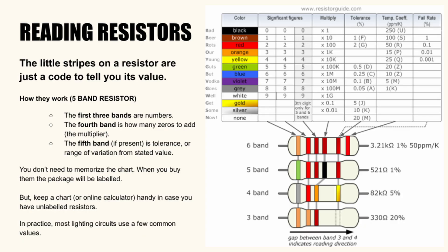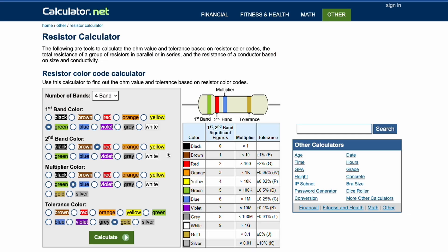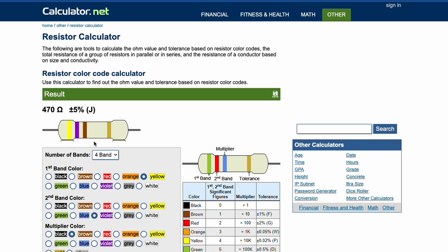Now you don't need to memorize this. When you buy resistors, they'll come labeled, and online calculators make reading them almost effortless. In practice, when lighting models, we usually stick to a handful of common resistor values for LEDs anyway, so this is really just a quick reference.